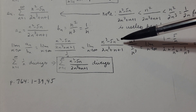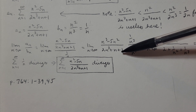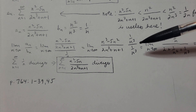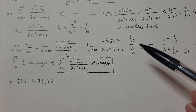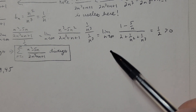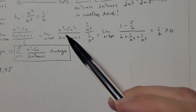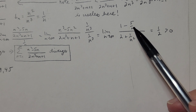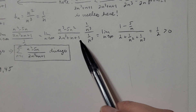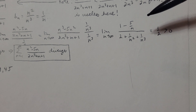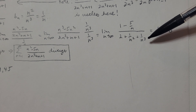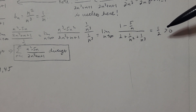We're in indeterminate form, so multiply top and bottom by 1/n³. Distributing gives the limit as n→∞ of (1 - 5/n) / (2 + 1/n² + 1/n³). As n→∞, the terms 5/n, 1/n², and 1/n³ all go to 0 since their denominators grow without bound. We get 1/2.